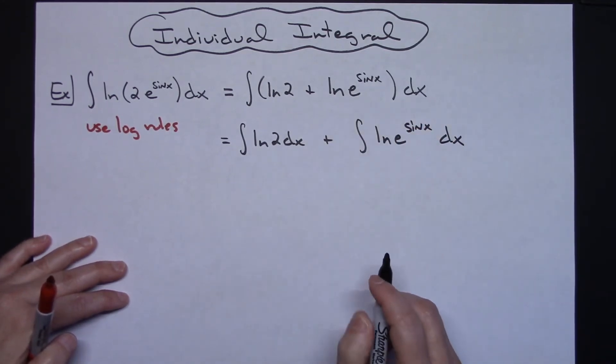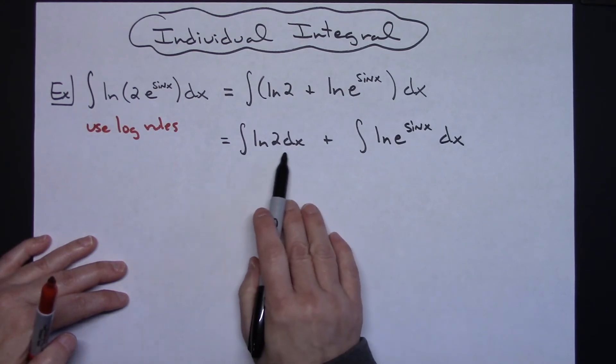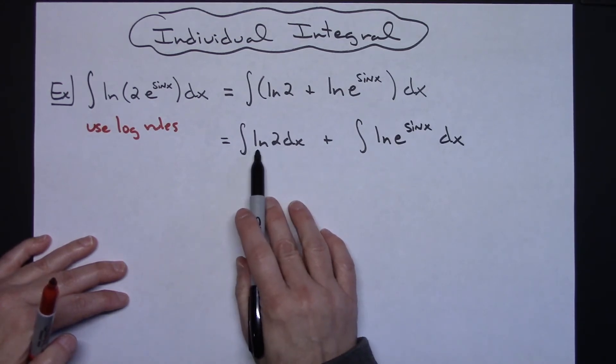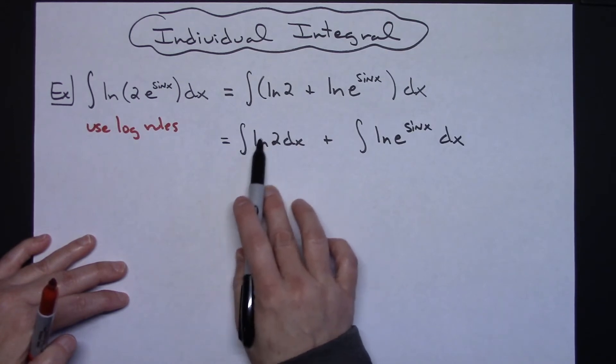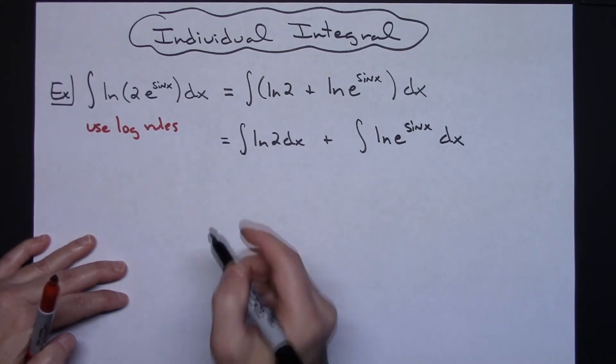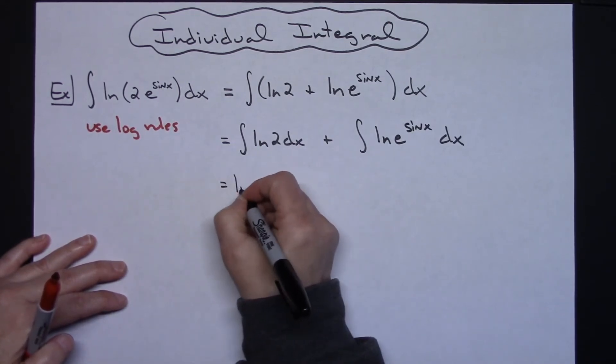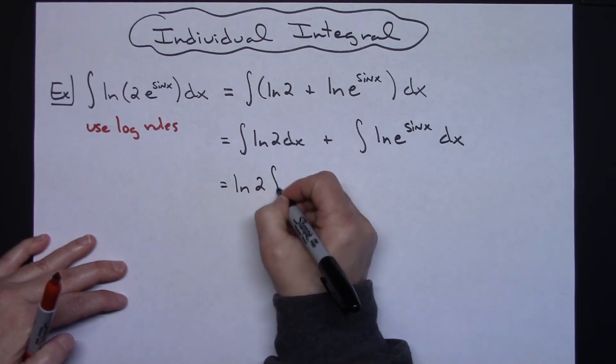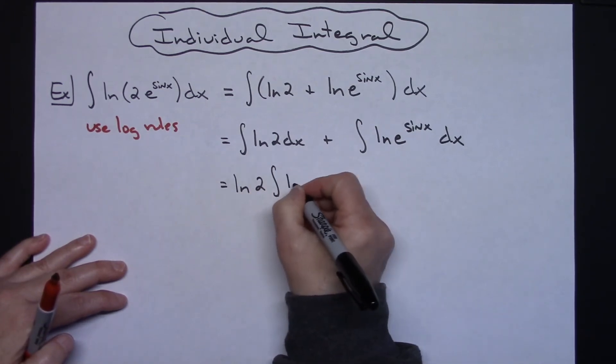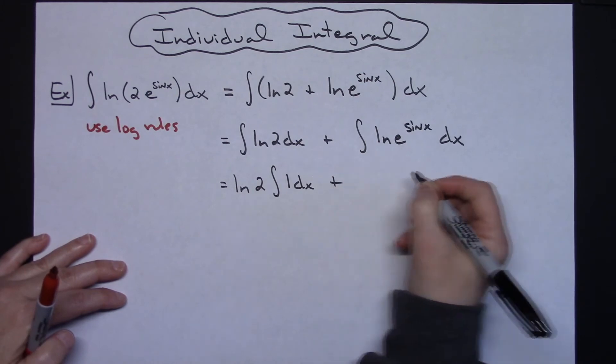Now we're going to take a look at this and realize that the natural log of 2 is just a constant. So I'm going to pull that out in front. I'm going to have natural log of 2 times the integral of 1 dx plus.